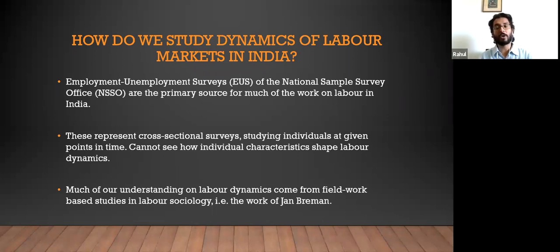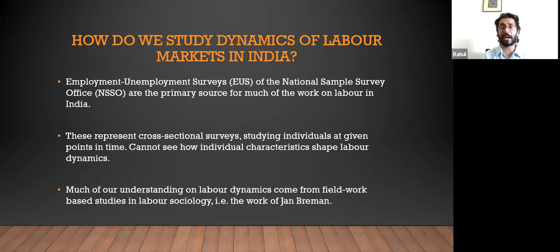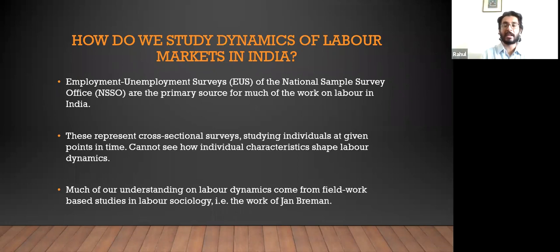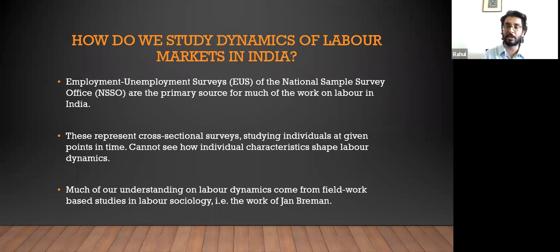For example, if I survey someone in 1993 and find they are unemployed, what happens after that? How long before they are employed? We are unable to answer these questions. Whatever analysis we get of labor dynamics can only be seen by looking at two separate cross-sectional surveys over time in the aggregate. We are unable to see how individual characteristics shape labor dynamics at a more granular level.